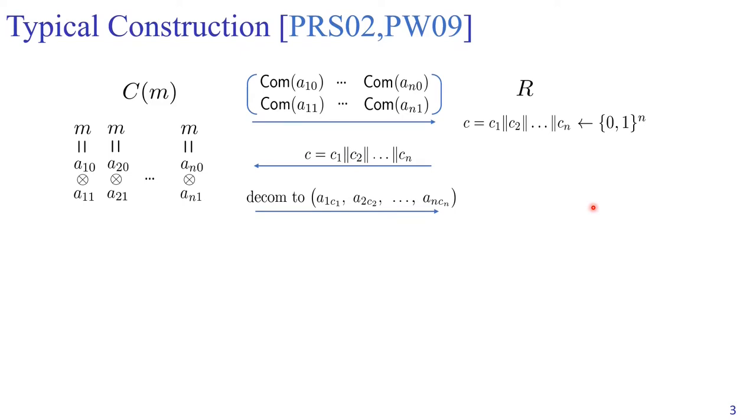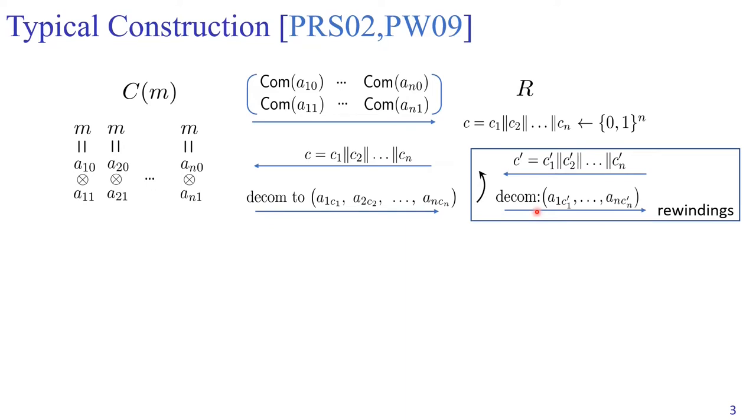Now let us recall how to extract the committed value if the committer C is malicious. Our extractor simply samples a new random string C prime, sends it to C star, and learns the corresponding decommitments. As long as C and C prime are not identical, there will be one column in this matrix where the malicious committer decommits to both positions in one column. These two decommitments allow us to recover the committed message M. This is how the extractor works in the classical setting.